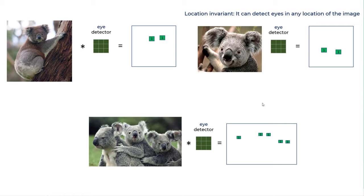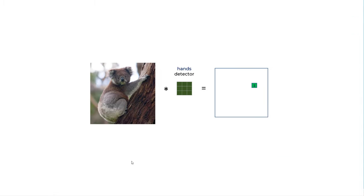These filters will detect those eyes and it will activate those particular regions. Here I have six eyes from three different koalas and they are activated accordingly. The hand of koala is in this particular region, therefore, when I apply hands detector, it will activate here.